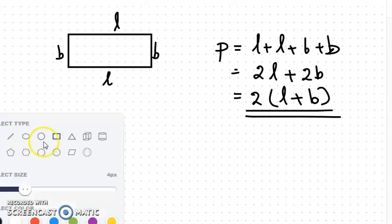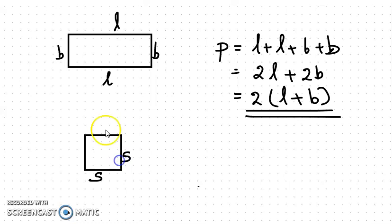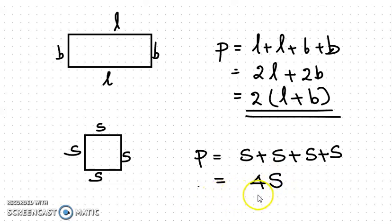For finding the perimeter of a square: in a square, all sides are the same. If we mark each side as S, then all sides are S. The perimeter is found by adding S four times, since there are 4 sides. So we can write it as 4 times S, or 4S.